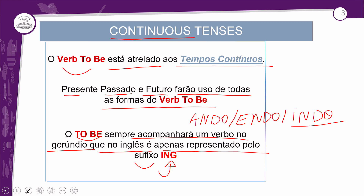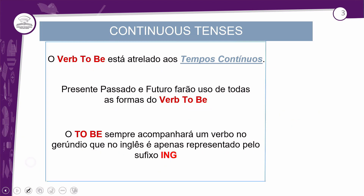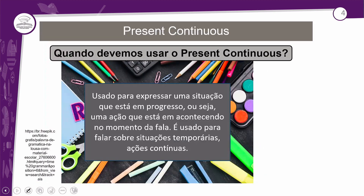Esse sufixo ING, no português, corresponde ao nosso famoso -ando, -endo e -indo ao fim dos verbos: falando, comendo, sorrindo. Você sempre vai usar o verbo estar — porque o to be significa ser e estar, mas para falar sobre tempos contínuos, você vai usar o estar: eu estou dormindo, eu estava dormindo, ou eu estarei dormindo. Presente, passado e futuro.